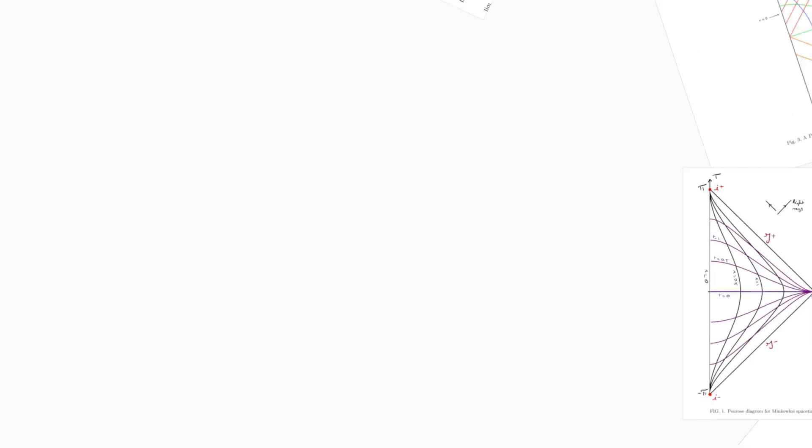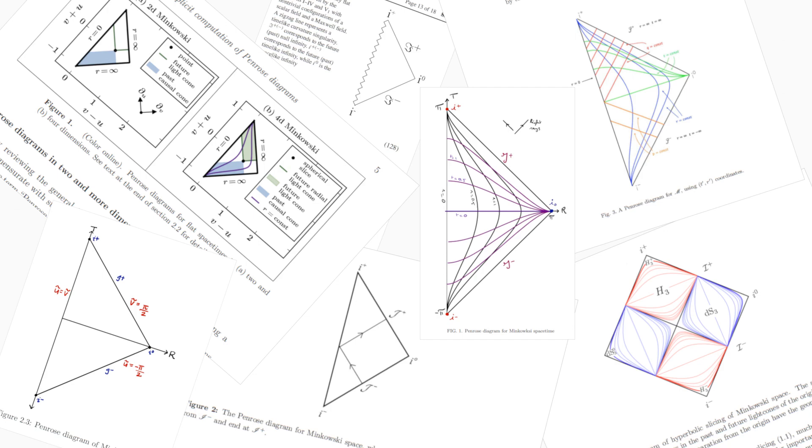You can compress the diagram like so, and now everything fits on a single page. This is the Penrose diagram for flat space. And this is a real diagram that you will see in scientific papers.